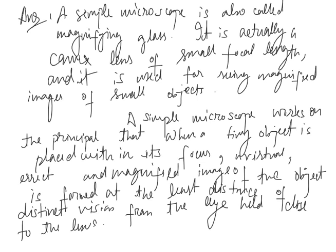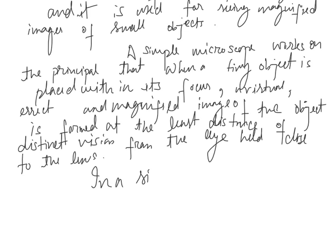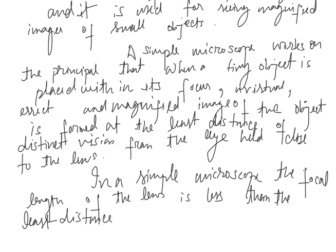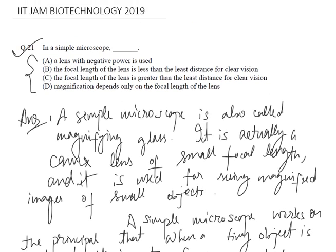In a simple microscope, the focal length of the lens is less than the least distance for clear vision. Therefore, the right answer is option B: the focal length of the lens is less than the least distance for clear vision. We have successfully answered this question. Thank you very much.